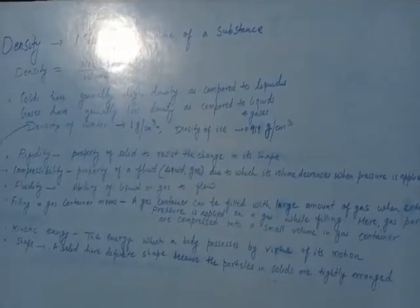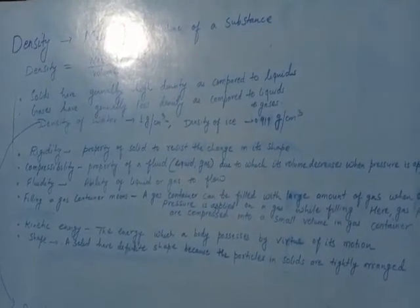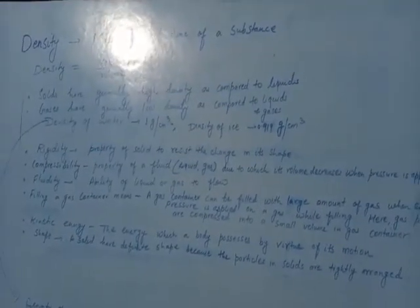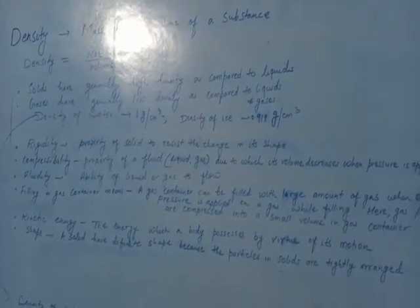Till now we discussed the properties of different states of matter — solids, liquids, and gases. Now you should also know some terms to help solve questions. The first one is density. Density is mass per unit volume of a substance. Mathematically, density equals mass divided by volume. As mass of a substance increases, density also increases because density is directly proportional to mass.